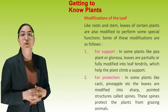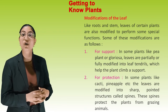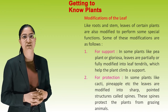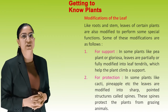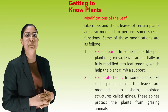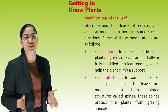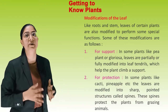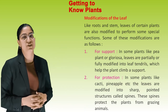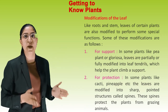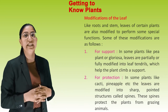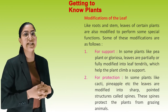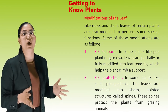Modification of Leaf: Like roots and stems, leaves of certain plants are also modified for special functions. For support — in some plants like pea plant or gloriosa, leaves are partially or fully modified into leaf tendrils which help the plant climb a support. For protection — in some plants like cacti and pineapple, leaves are modified into sharp, pointed structures called spines, which protect the plant from grazing animals.